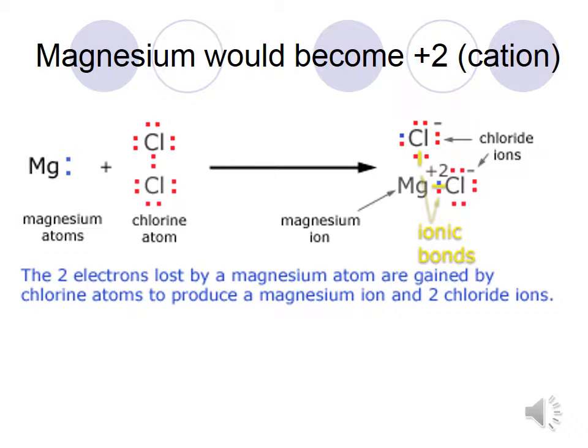Magnesium has two valence electrons — notice it's in group 2. Magnesium will become +2 because it's going to give away its electrons to the two chlorine atoms in this example. They form an ionic bond. The benefit here is that magnesium is a metal and chlorine is a non-metal.